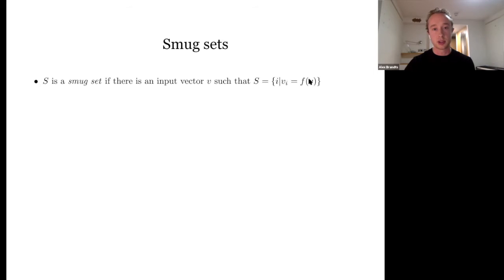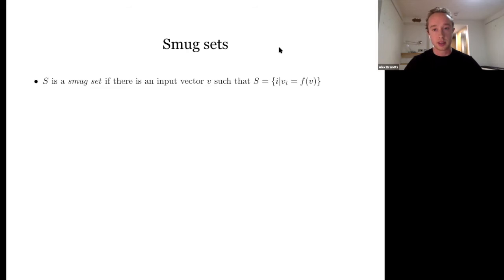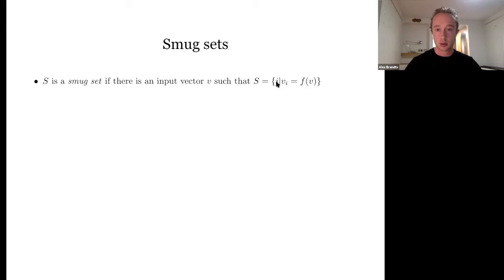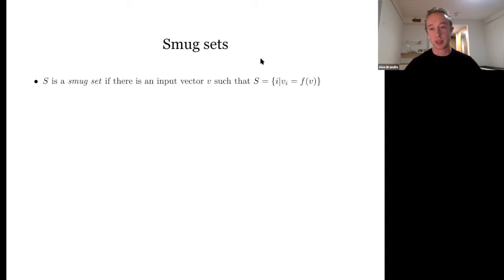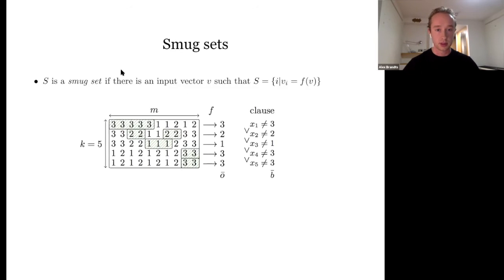What worked is the notion of smug sets. A smug set is a set of coordinates of your function whose values are equal to the output value of the function — the set of i such that v_i equals f(v). They're called smug because they're proud that the function has chosen their particular value.